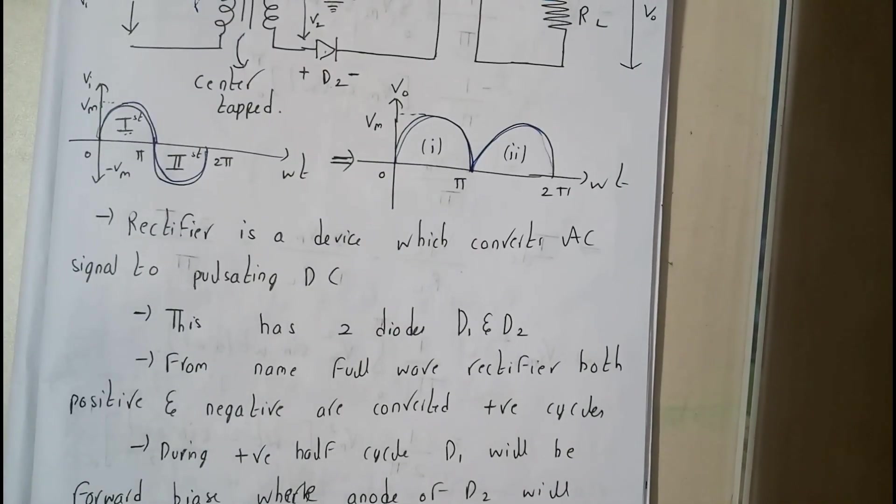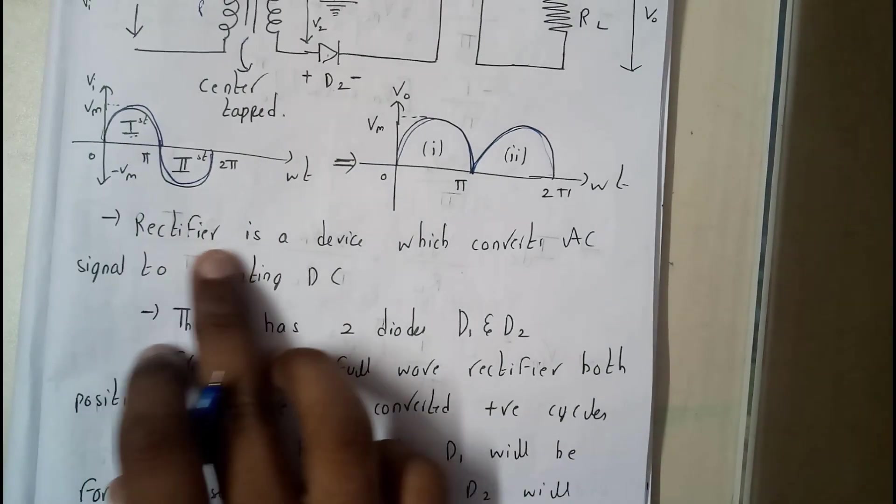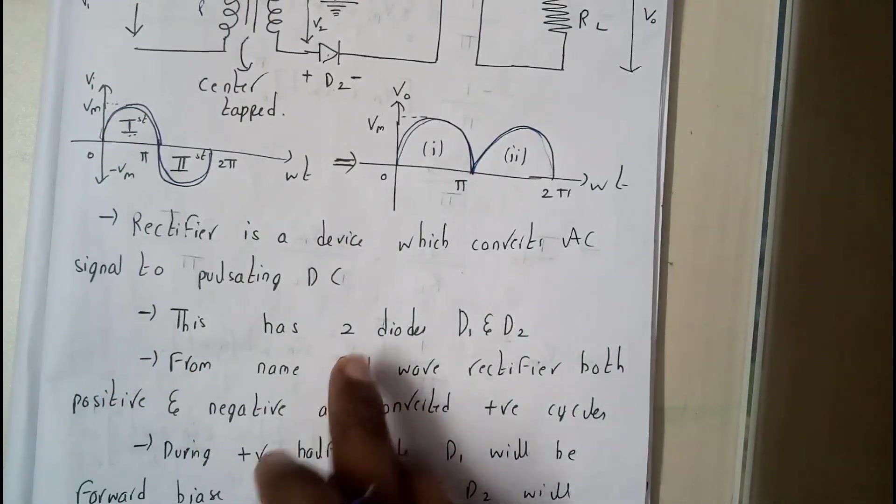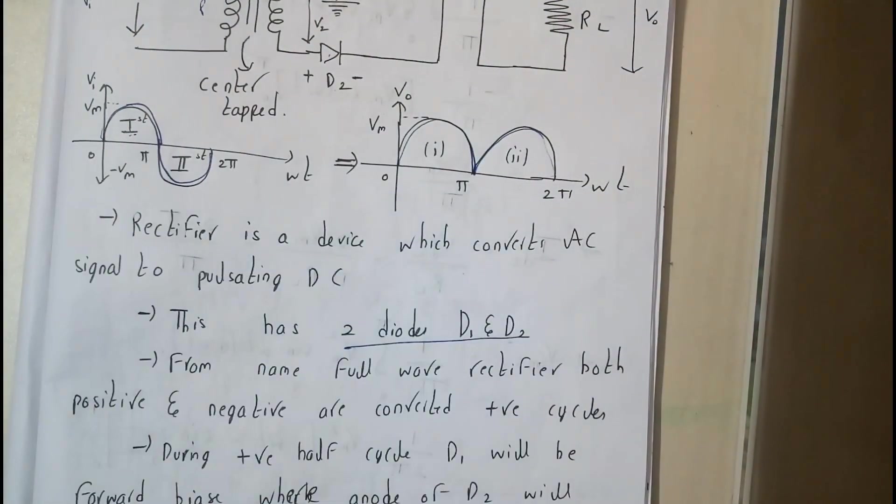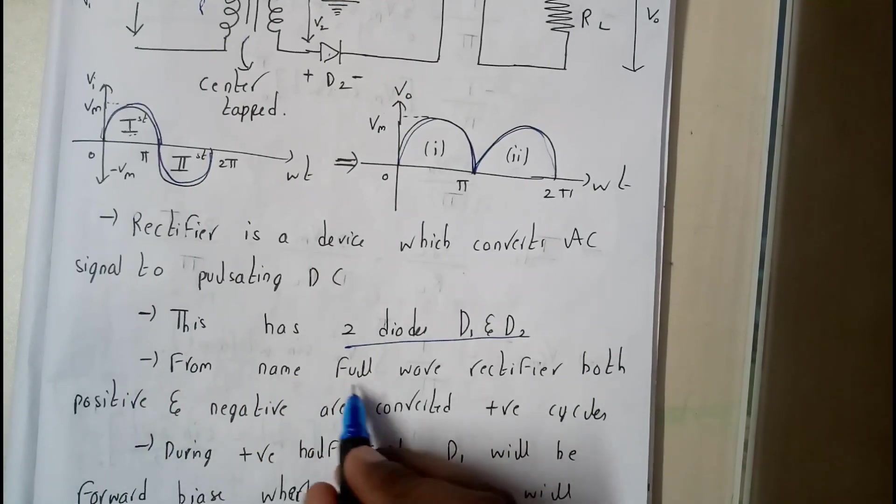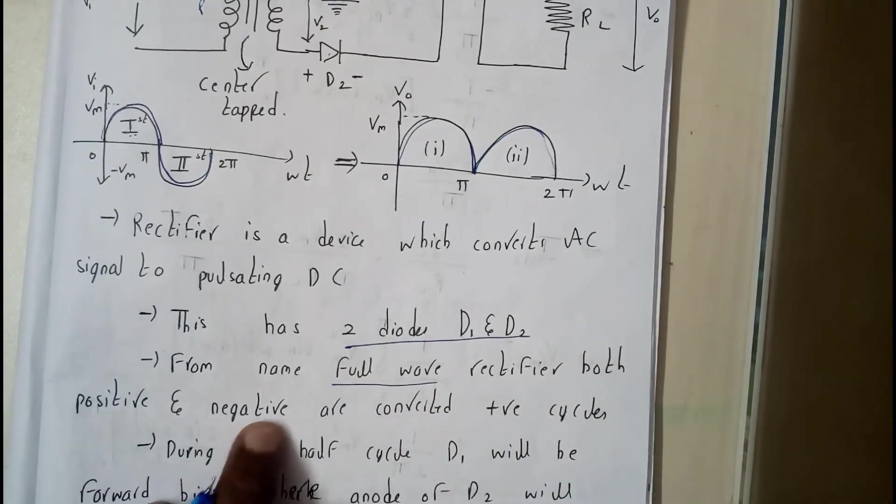I went a bit fast because we have discussed all these things in our first tutorial on half-wave rectifier. Now let us further move on. Rectifier is a device which converts AC signal to pulsating DC. This has two diodes, D1 and D2.